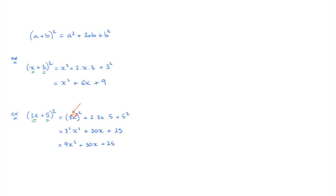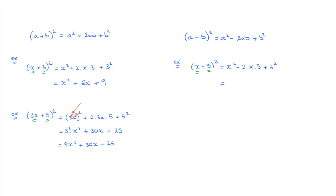The second formula we saw was a minus B squared equals a squared minus 2ab plus B squared. For instance, to expand x minus 3 squared, we've simply replaced a by x and B by 3. Using the formula and replacing every a by x and every B by 3, that gives us x squared minus 2 times x times 3 plus 3 squared, which leads to x squared minus 6x plus 9.